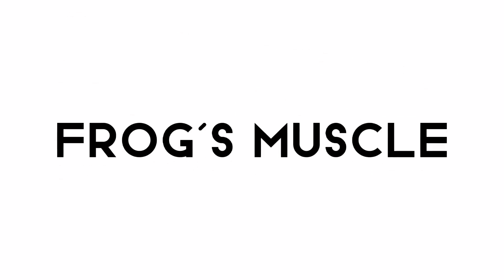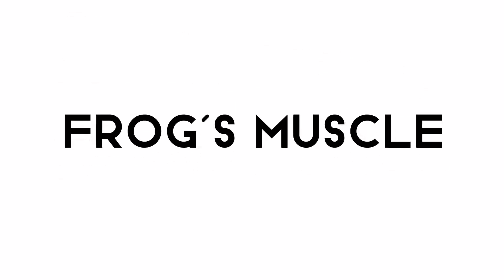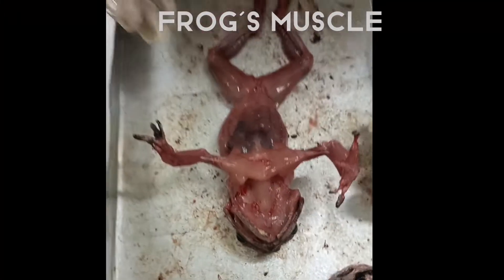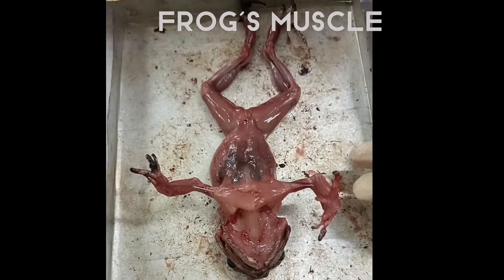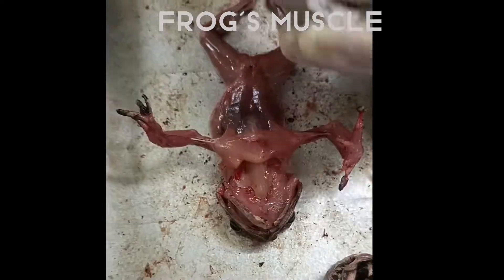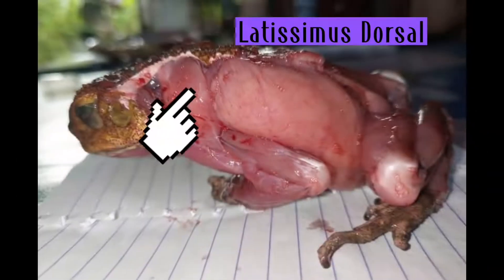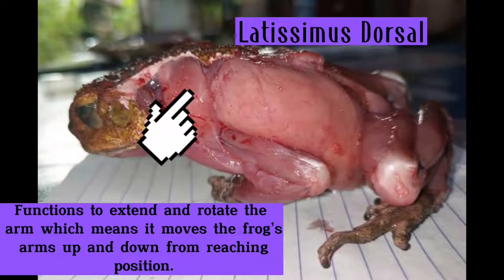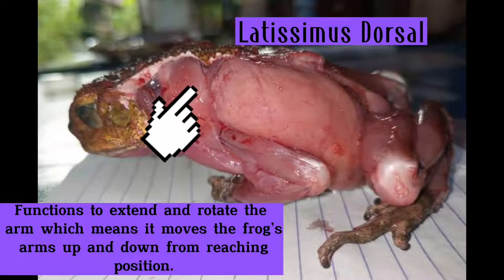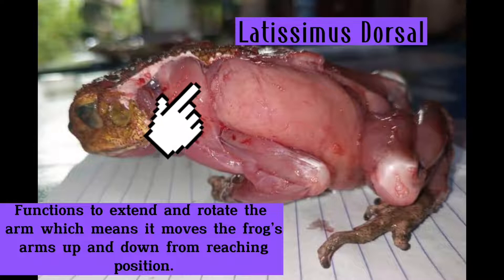Today, we are going to identify the frog's muscles and its functions through video presentation. The latissimus dorsi functions to extend and rotate the arm, which means it moves the frog's arms up and down from reaching position.